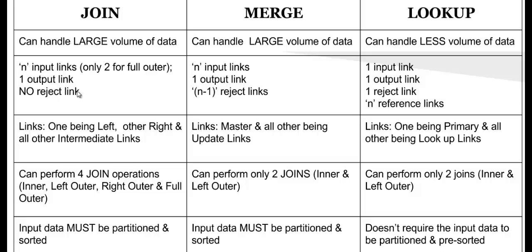Join stage does not accept any reject link. Merge stage, if you have N input links, accepts N minus one reject links — so N input links are master links and N minus one are reject update links. Lookup stage can have one reject link. So in an interview, if they say you have large data and want to collect reject records, you'd rule out Join and consider Merge or Lookup.